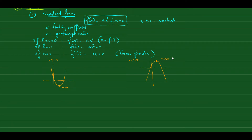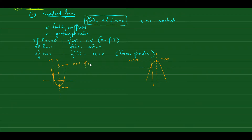The vertical line that passes through the minimum or maximum point is called the axis of symmetry. The equation for the axis of symmetry is x = −b/(2a). This is the equation of the axis of symmetry.